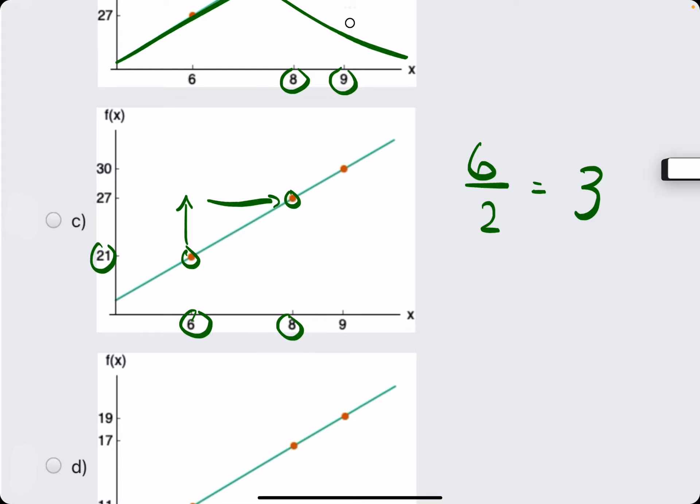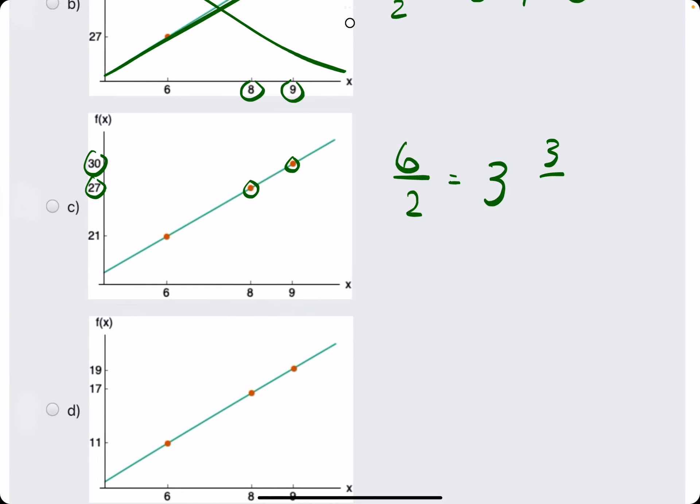So we want to check, does the slope between here and here equal 3? We have a rise from 27 to 30 of 3. So far so good.